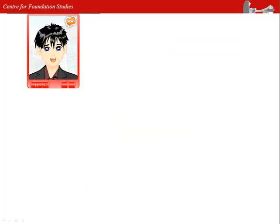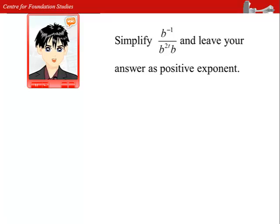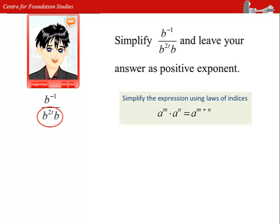Let's take a look at another question. b to the power of negative 1 divided by b to the power of 2t times b, leaving the answer as positive exponent. We can simplify the denominator first by using laws of indices.